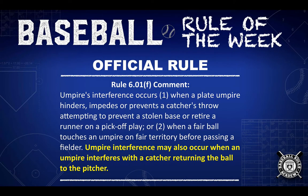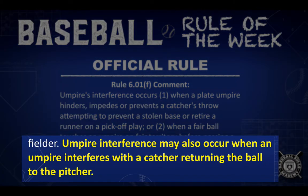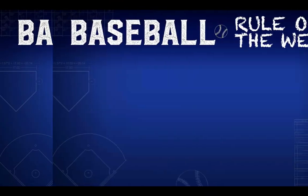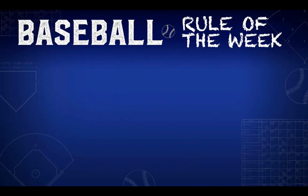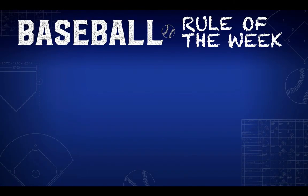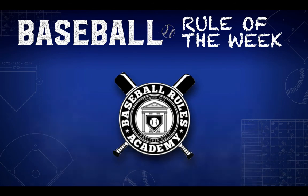Official Rule 6.01 f comments on umpire's interference and notes that umpire interference may also occur when an umpire interferes with a catcher returning the ball to the pitcher. BaseballRulesAcademy.com — your number one source for rules of the game.